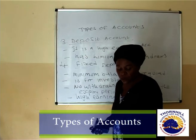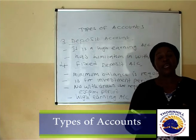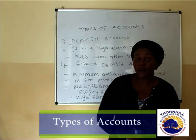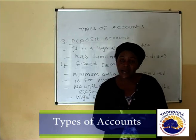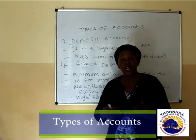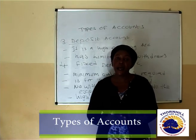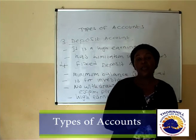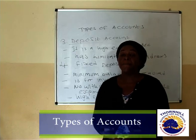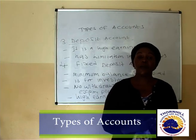We also have another account called a joint account. From the word itself — joint — this is an account which is opened by more than one person, with a minimum of two people. For example, you can open a savings account as a joint account where two or three people are the owners. You choose how many people can become signatories to this account.